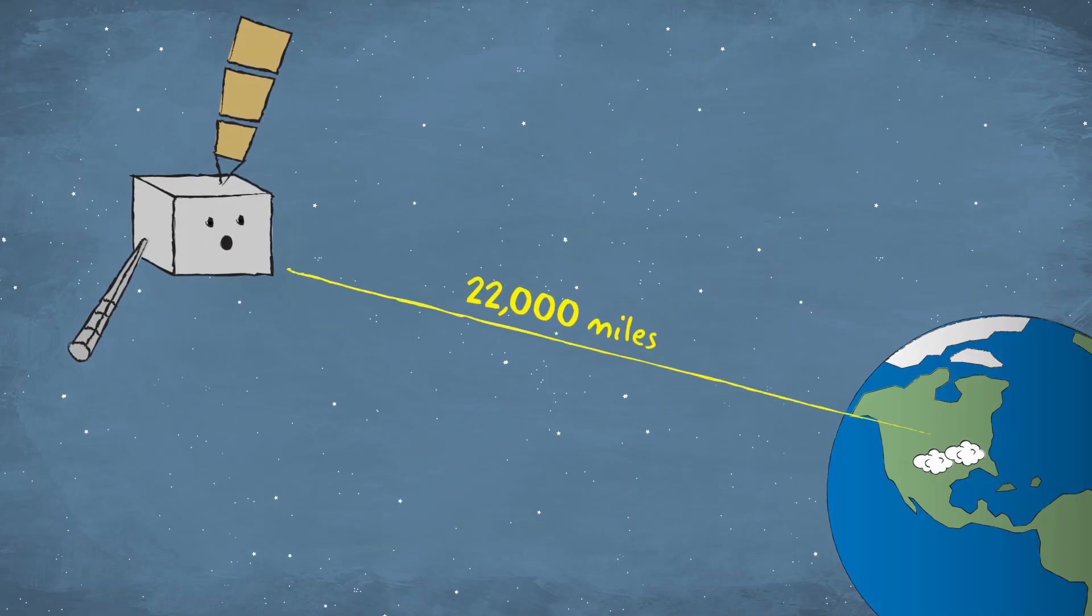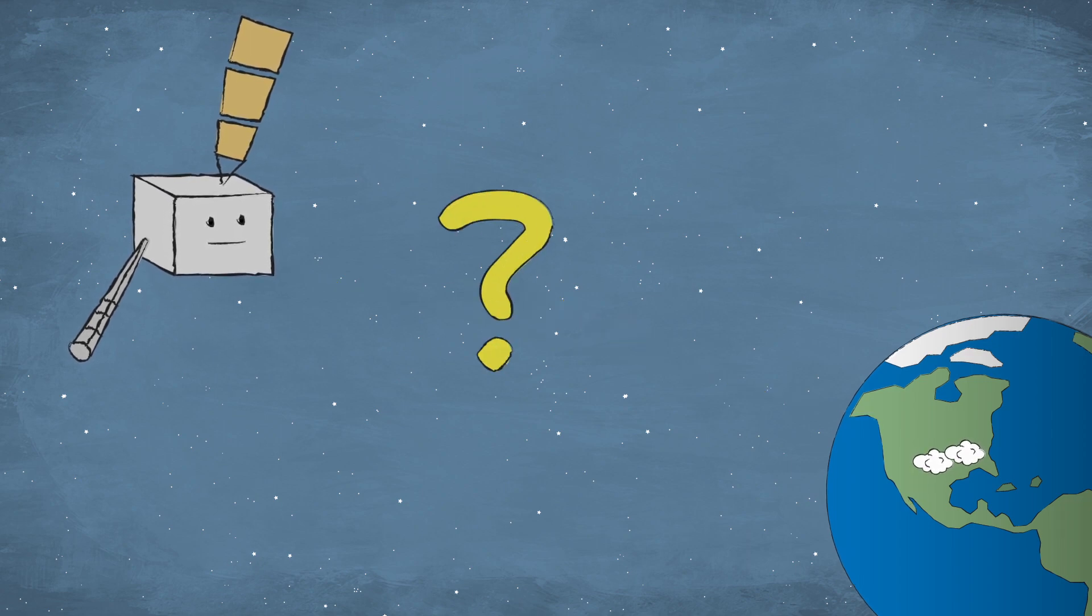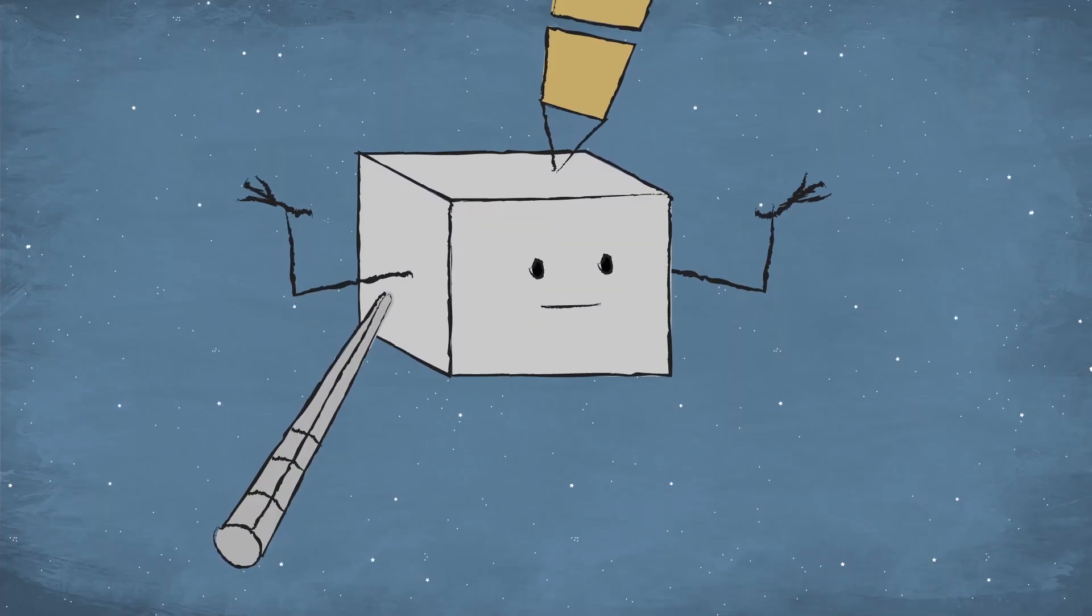But I'm 22,000 miles above Earth. How does your local weather forecaster know what I see all the way up here? First, I have to figure out what's going on.